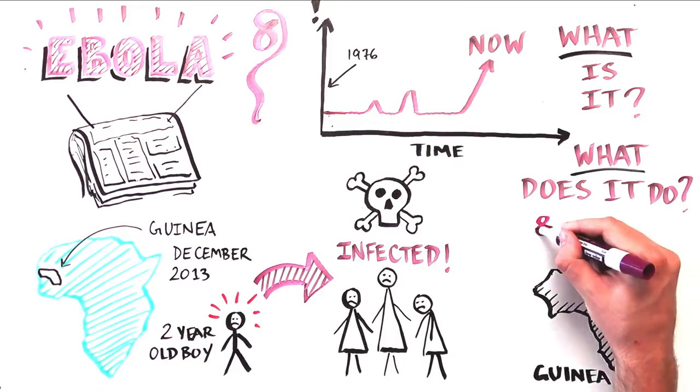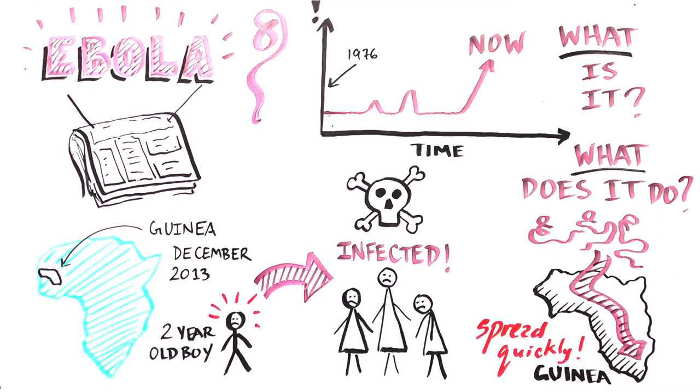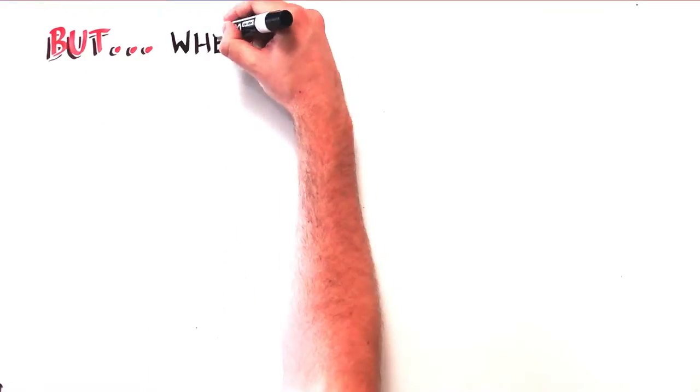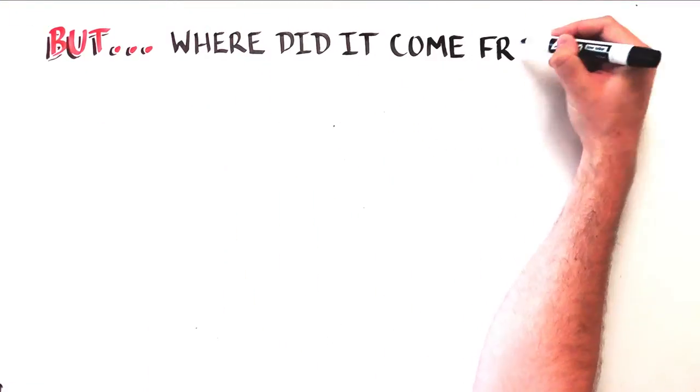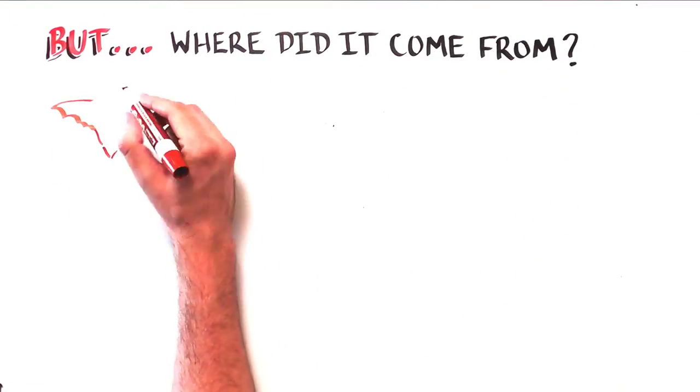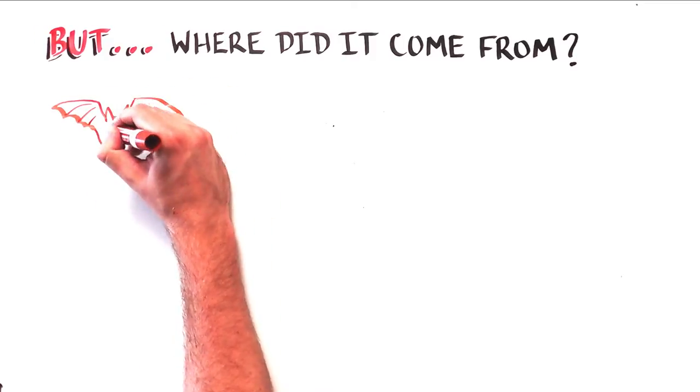After which the virus quickly spread through Guinea to Sierra Leone. But where did the virus come from? The virus can be carried by fruit bats, which are a natural host of the virus and don't get sick from it.